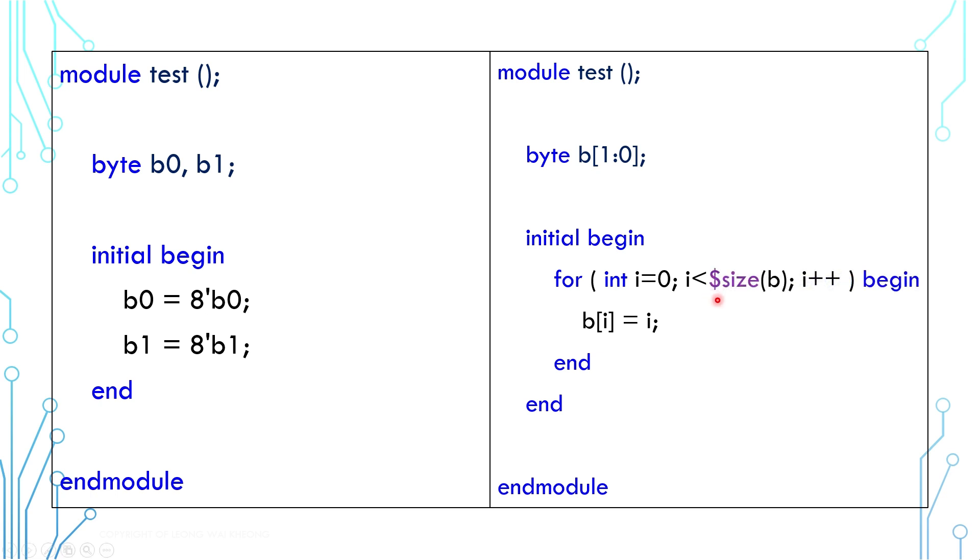We can use a system function called $size to query the size of an array. In this case, it would return 2. Up until now, we have evolved this code several times. They all work in the same manner, but this one here is a scalable one.